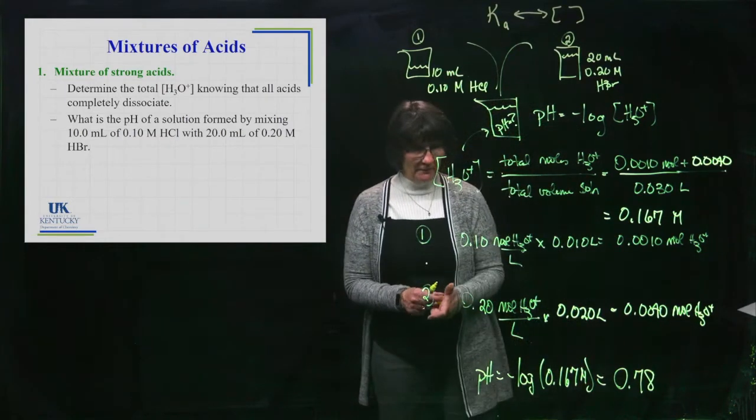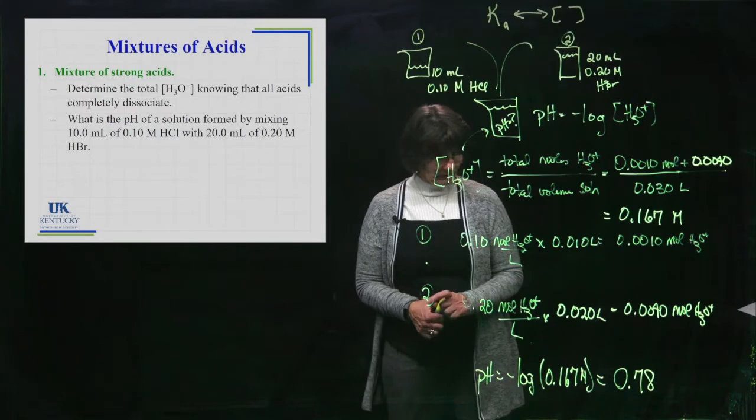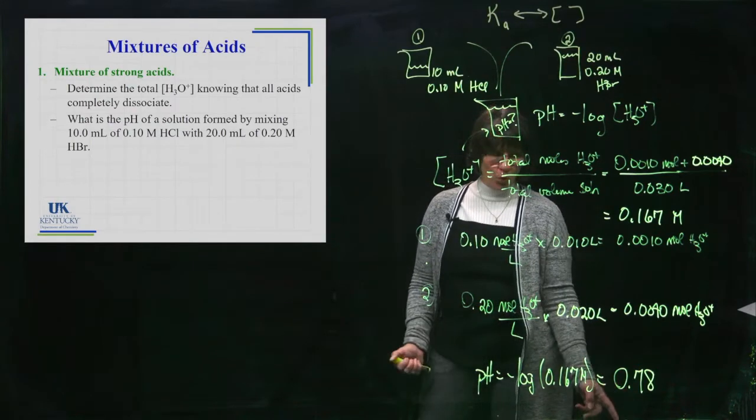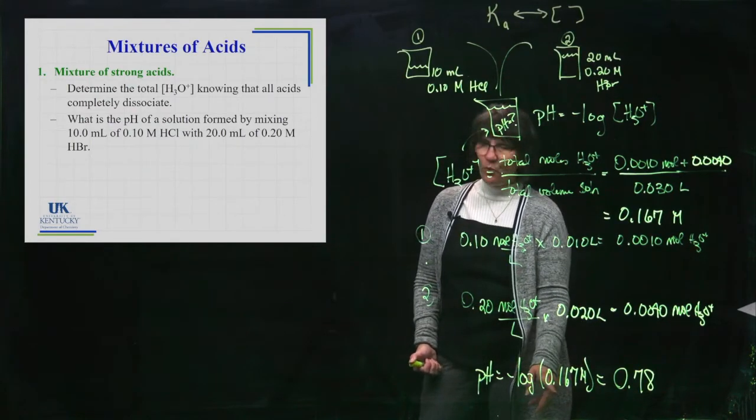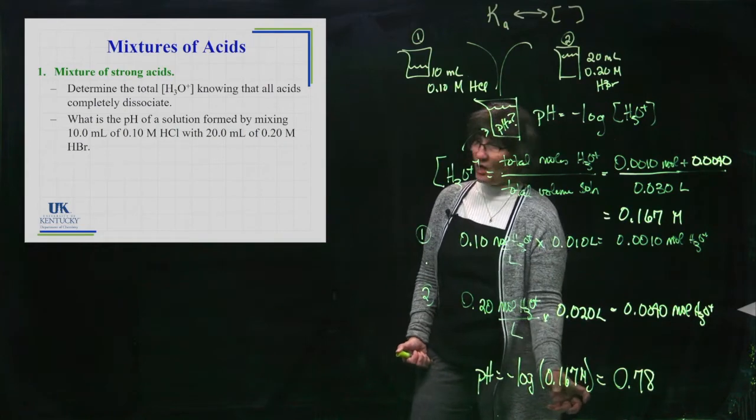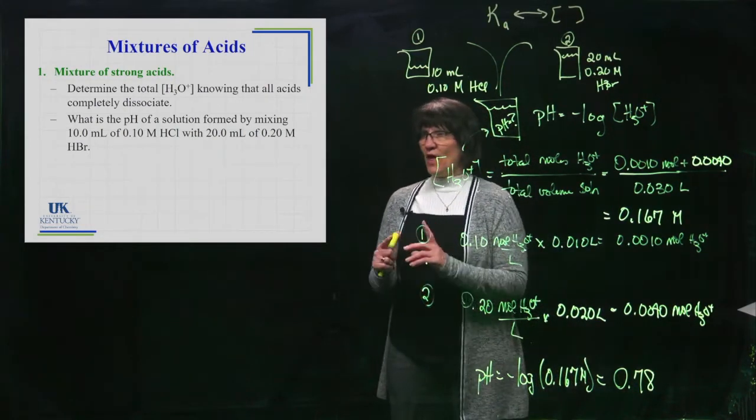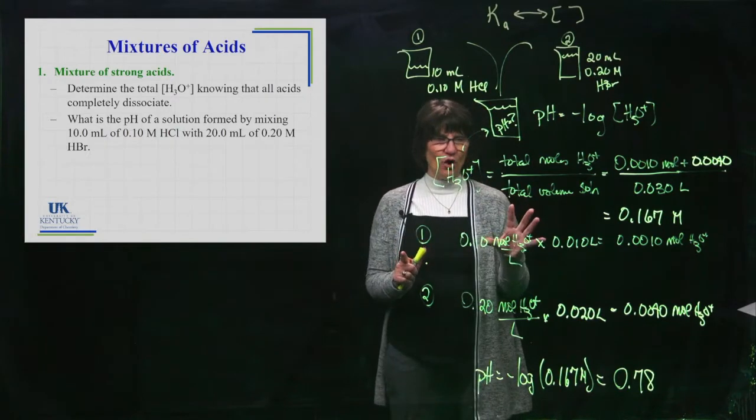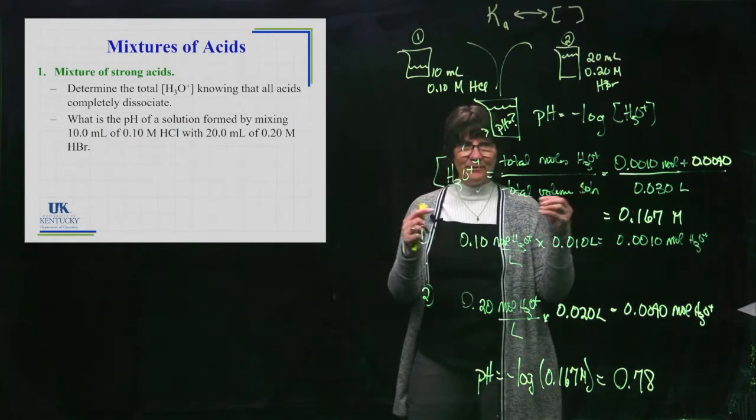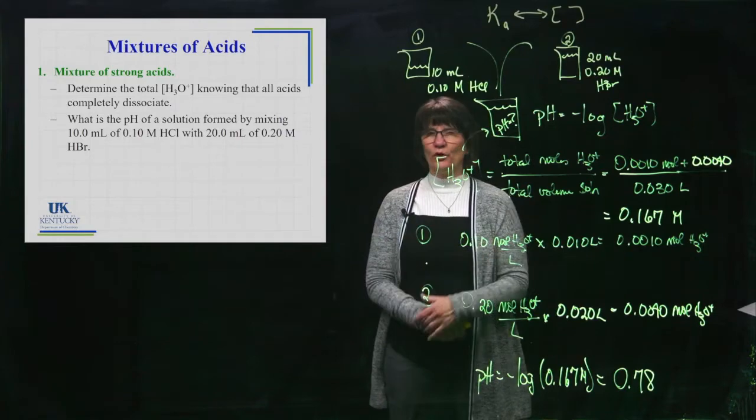I know that the pH can be determined by taking the negative log of the H3O plus concentration that we just figured out, 0.167. That gives me a pH of 0.78. So it's less than one. pH of one is when you have a 0.1 molar solution, and this is even more concentrated than that. That's the situation where both of them are strong.